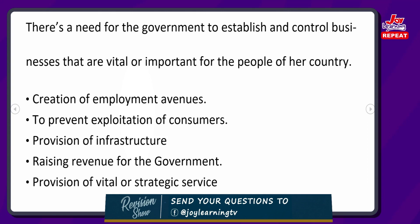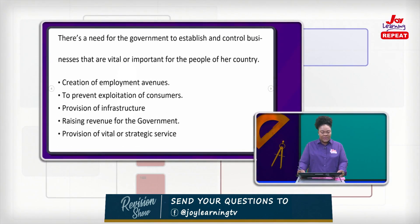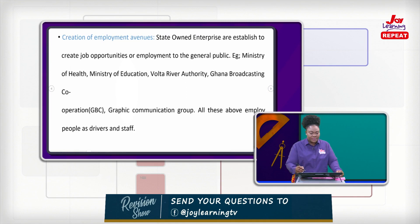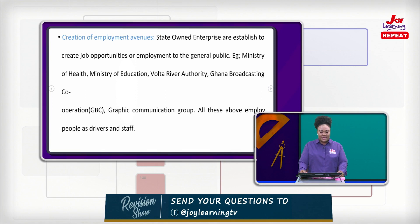If the state owns certain businesses or enterprises, people will be able to get jobs such as drivers and staff in various organizations. It also prevents exploitation of customers. Thirdly, provision of infrastructure and raising revenue for the government. And fourthly, provision of vital and strategic services. State-owned enterprises are established to create job opportunities or employment to the general public.